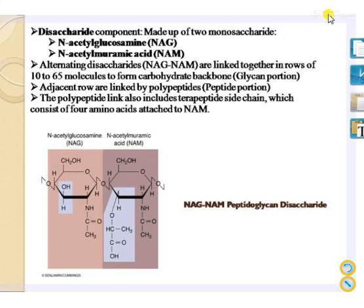The glycan portion is made up of a disaccharide component consisting of two monosaccharides: N-acetylglucosamine (NAG) and N-acetylmuramic acid (NAM). Alternating disaccharides are linked together in a row of 10 to 65 molecules to form the carbohydrate backbone — this is called the glycan portion. Adjacent rows are linked by polypeptide chains, and this polypeptide linkage also includes tetrapeptide side chains consisting of four amino acids attached to NAM.